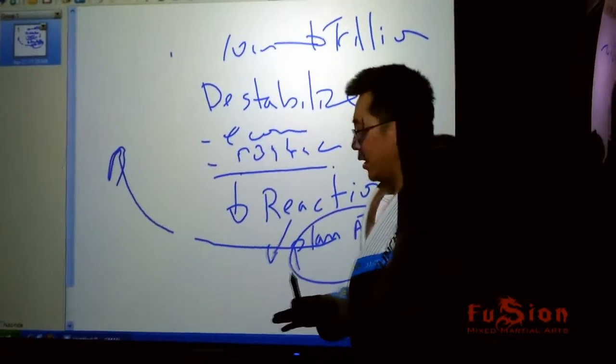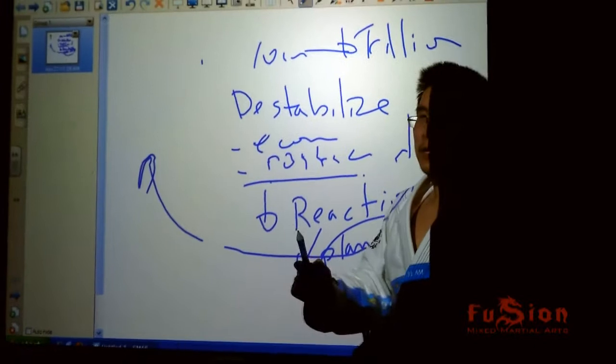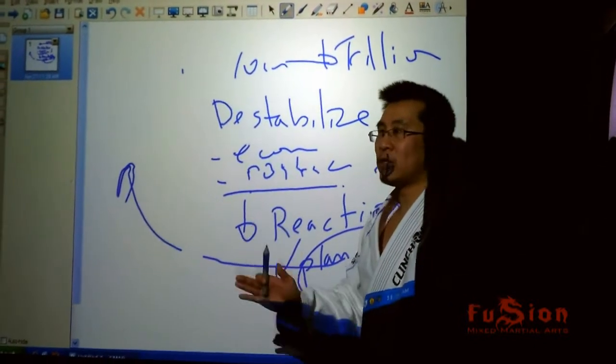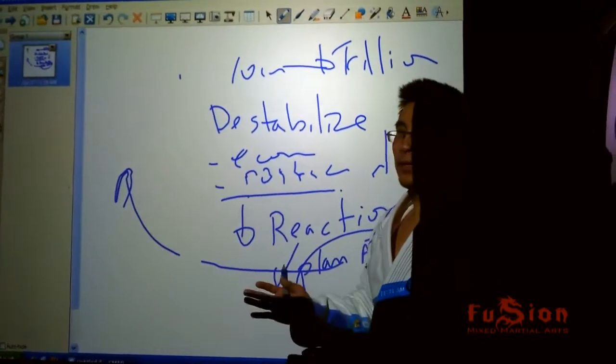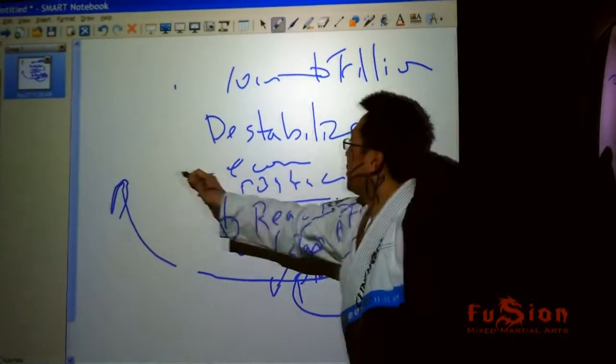In Miyamoto Musashi, The Book of Five Rings, he said everything in life has strategy. Find the strategy first. Then create a way to win. Everyone got that? Okay? Do not get into the habit of coming straight on.